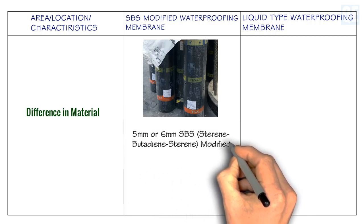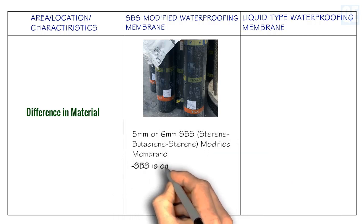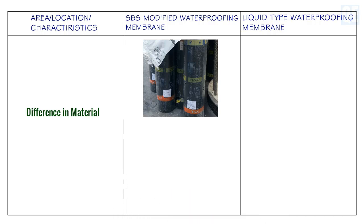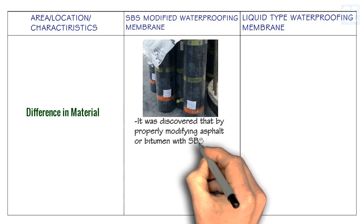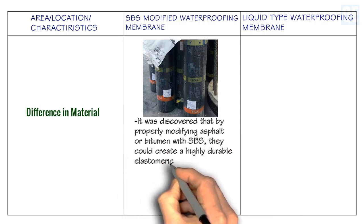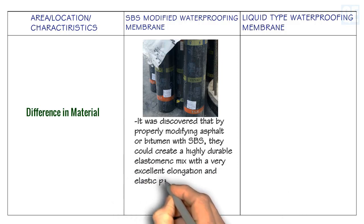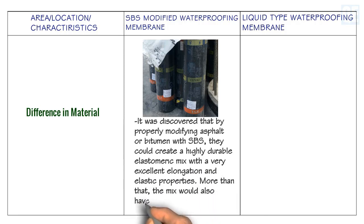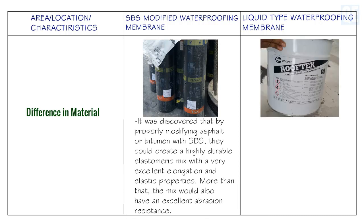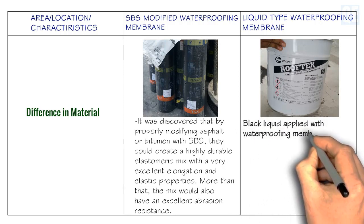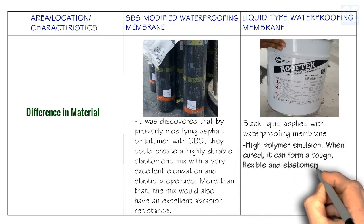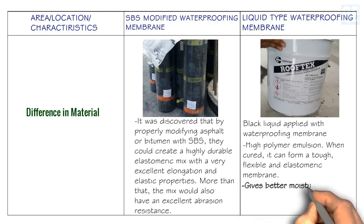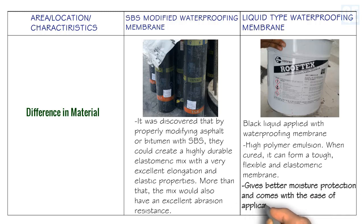The SBS modified waterproofing membrane is a 5 mm or 6 mm styrene-butadiene-styrene modified membrane. SBS is one of the families of synthetic rubber. It was discovered that by properly modifying asphalt or bitumen with SBS, they could create a highly durable elastomeric mix with excellent elongation and elastic properties, as well as excellent abrasion resistance. The liquid waterproofing membrane is a black liquid-applied waterproofing — a high polymer emulsion that, when cured, forms a tough, flexible, and elastomeric membrane, giving better moisture protection with ease of application.